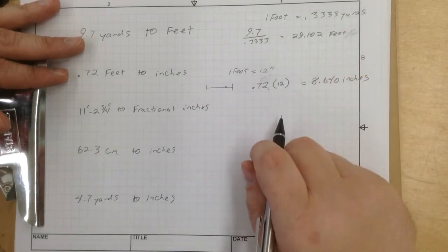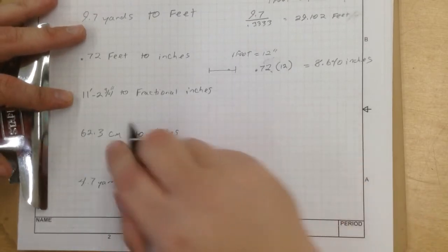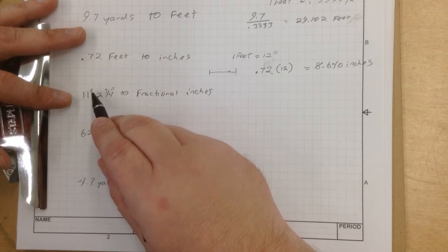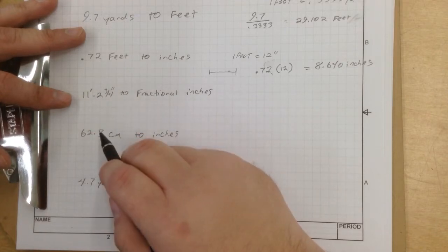So 0.72 times 12 gives us 8.640 inches. Okay, so we've got that right there. Now next is 11 foot 2 3 quarter inches to fractional inches. And remember, one hash mark right there is feet. Two hash marks are inches.